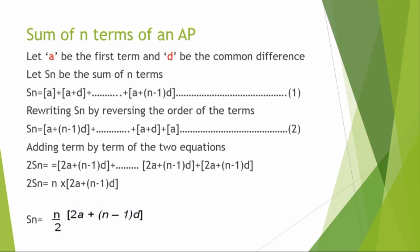The Nth term is going to be the same form. Rewriting it, if you are going to rewrite it, you will get it in reverse order. If you rewrite it, we will get Sn equal to A plus (N minus 1) into D, written in ascending order.